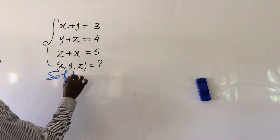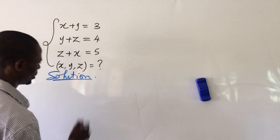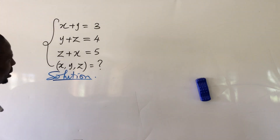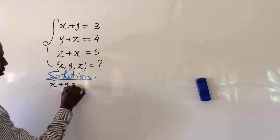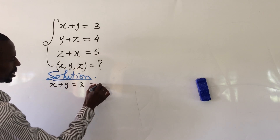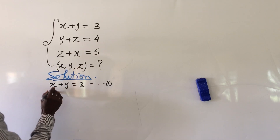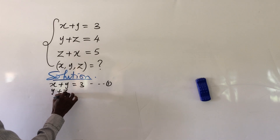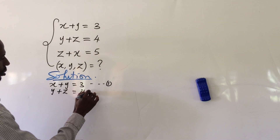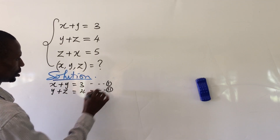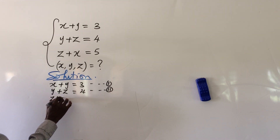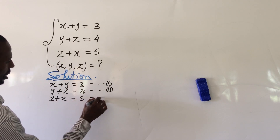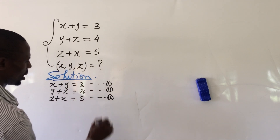Let's take our solution without much waste of time. We bring down all three equations: the first one, x plus y equal to 3 — let's call this equation 1. We have y plus z equal to 4, this is equation 2. And the last one, z plus x equal to 5 — let's call this equation 3.